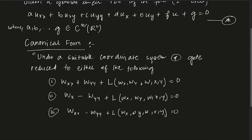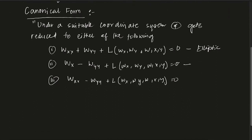This canonical form does not change the nature of the equation. Looking at the discriminant: if it is negative, it is an elliptic problem; if it is positive, it is a hyperbolic problem; and if it is zero, it is a parabolic problem. Equation (1) is elliptic, equation (2) is parabolic (like the heat equation), and equation (3) is hyperbolic.